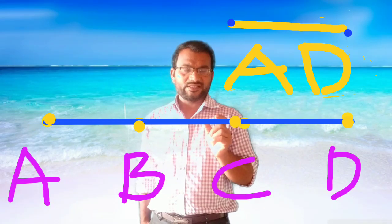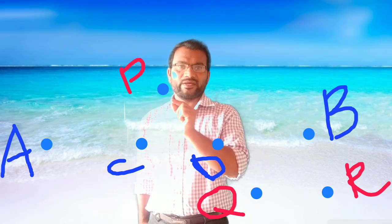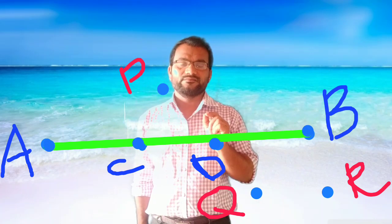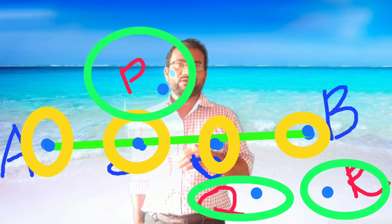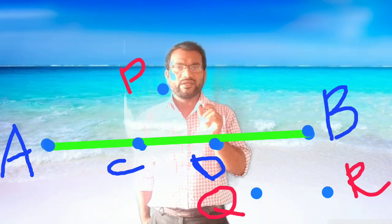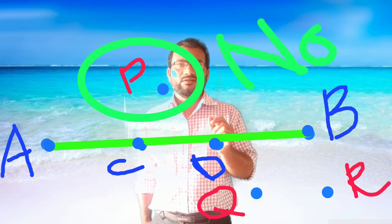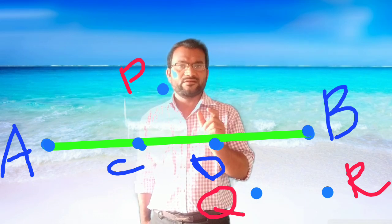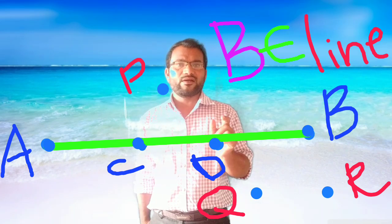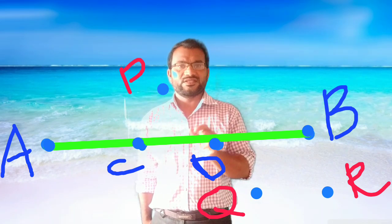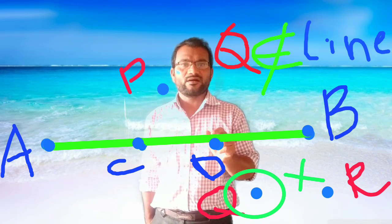We know a line segment is a set of collinear points. Here, my line segment is AB. Some points are on the line segment and some are not. Point B is on the line segment, so B belongs to the set of points on line segment AB. Point Q is not on the line segment, so Q does not belong to the set of points on line segment AB.